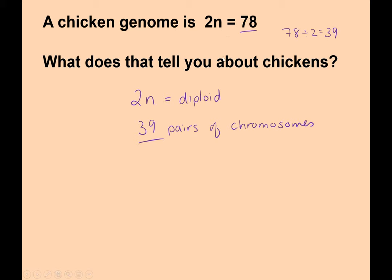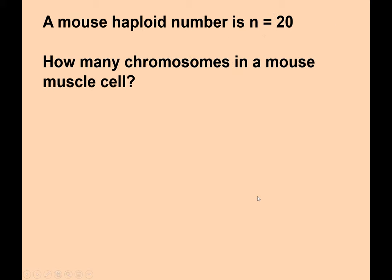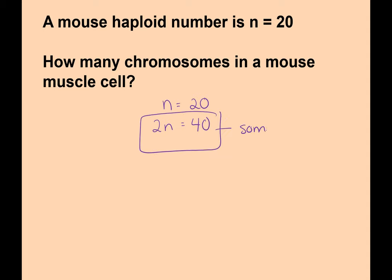What if I told you a mouse haploid number is 20? How many chromosomes in a mouse muscle cell? If n equals 20, mice are diploid. So in all of their somatic cells, like a muscle cell, they have 40 chromosomes. The only place mice are going to be haploid is in their egg or sperm.